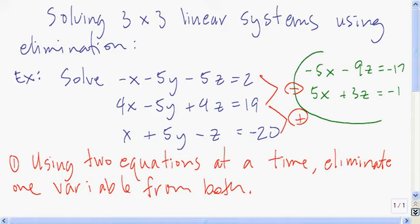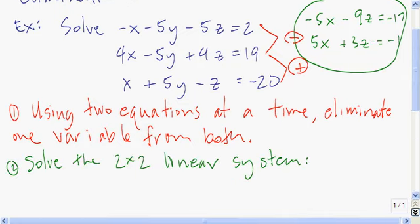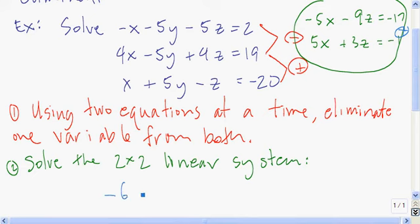So what I've done here is I've now reduced it to a 2x2 linear system, and we already know how to solve that really easily. Because of this negative 5x and this positive 5x, it will be easier to add corresponding sides — that's going to get the x to drop out. So negative 5x plus 5x is zero. Negative 9z plus 3z is minus 6z. And negative 17 plus negative 1 is negative 18.